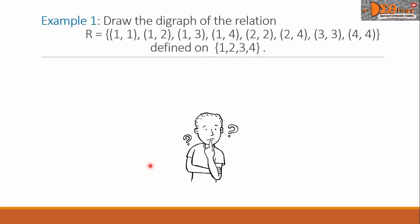Let us see Example 1. Draw the digraph of the relation R, which consists of ordered pairs from (1,1) up to (4,4), defined on the set with elements 1, 2, 3, and 4.